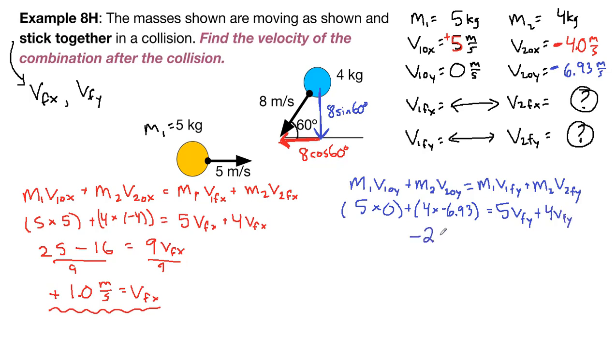On the left, we have negative 27.7. 5 times 0 equals 9 v final y on the right. We divide both sides by 9. We're going to get negative 3.1 meters per second is equal to v final y.